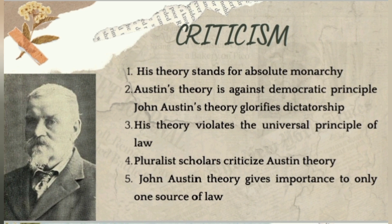Further criticism: Austin's theory stands for absolute monarchy, emphasizing a definite authority. His theory is against democratic principles because it advocates monarchical absolutism. The Austinian theory glorifies dictatorship and violates universal principles of law. Pluralist scholars also criticize the Austinian theory, noting that Austin gives importance to only one source of law.